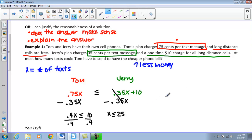If I go back and check my problem where I take x and put that in, I'm going to replace it with 25. I have .75 times 25 is less than or equal to .35 times 25 plus 10. When I plug this into my inequality and I solve, the check is going to mean that they are the same. Their bills will be exactly the same if they each send 25 texts. Now if we want Tom to have the cheaper bill, we need to explain our answer.